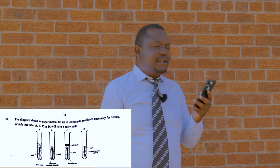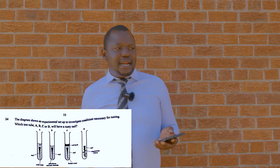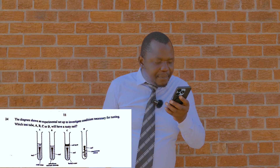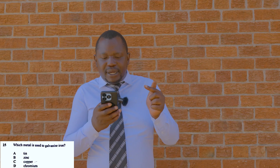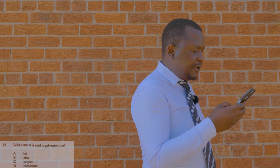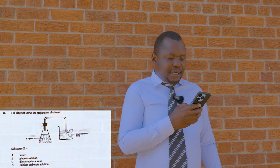Anhydrous calcium chloride removes moisture. Question 25: which metal is used to galvanize iron? Galvanizing iron involves coating it with zinc as a sacrificial coating. Corrosion agents attack the zinc rather than the iron. The answer for question 25 is zinc — option B.